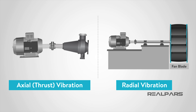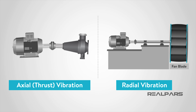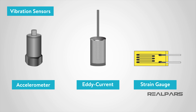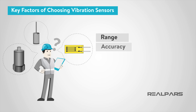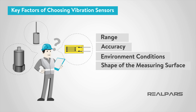In closing, we discussed the differences in axial and radial vibration and their effect on machinery. We also identified three different types of vibration sensors: the accelerometer, eddy current or capacitive, and strain gauge. These sensors are the most common vibration sensors, but they are not the only option for your application. When determining the correct vibration sensor for your application, it is important to consider the range and accuracy, environmental conditions, and the shape of the measuring surface, so that the sensor will perform the best in your application.